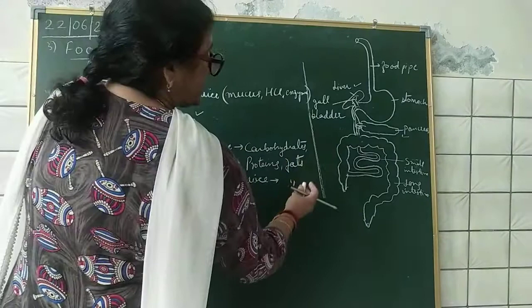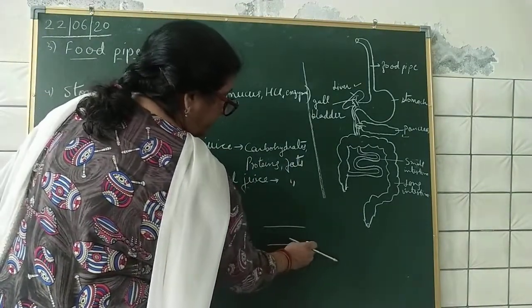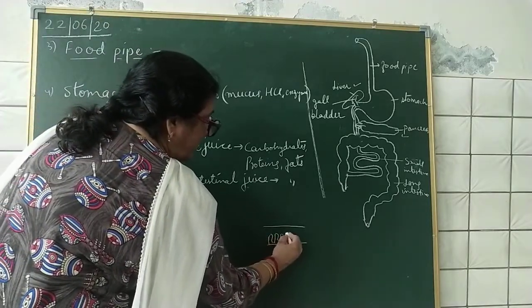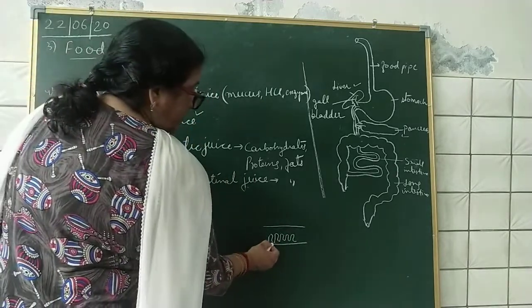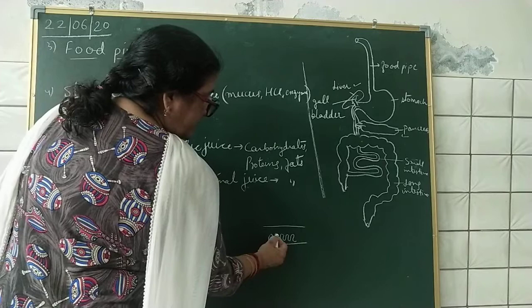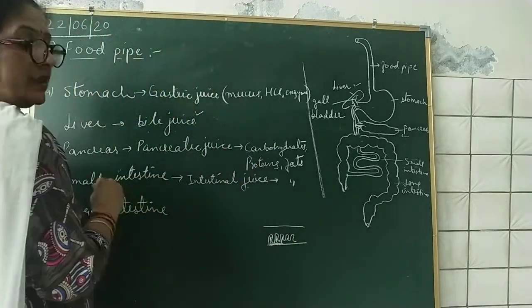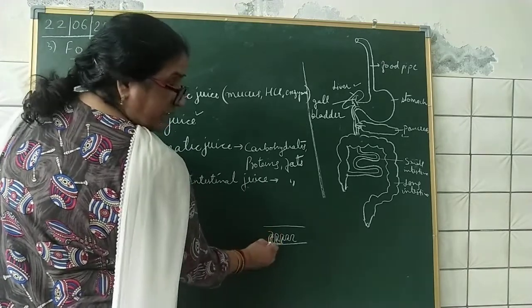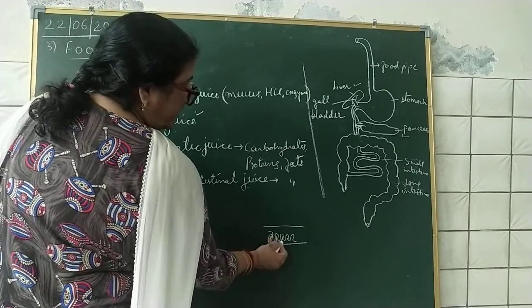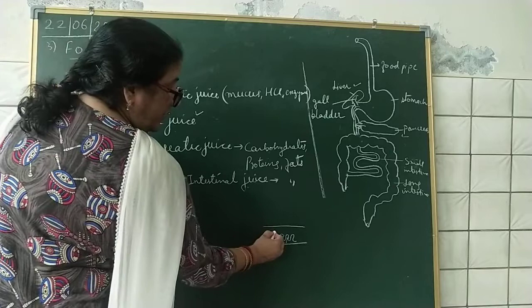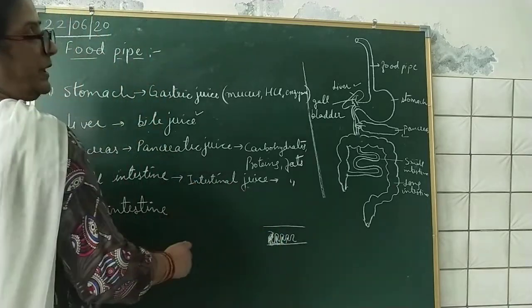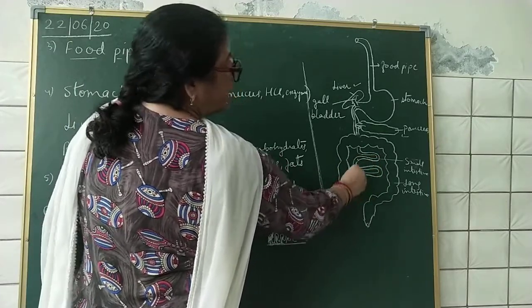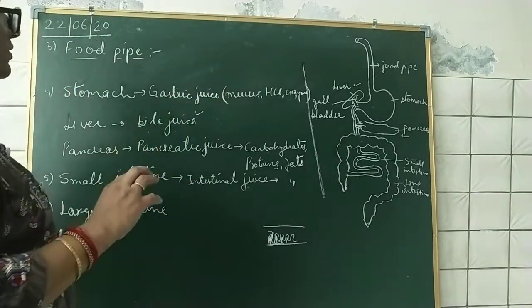The inner wall of the small intestine has finger-like projections called villi. These villi are supplied with blood capillaries. After digestion of food, the food is absorbed into these villi, which have blood vessels. From here, the food enters into the blood and gets distributed to all parts of our body.